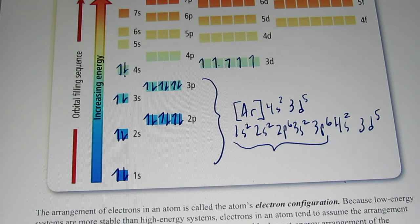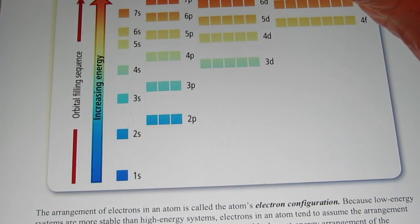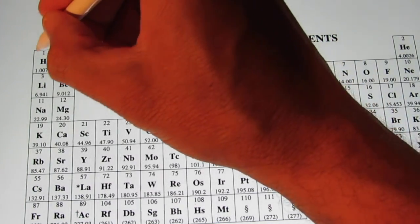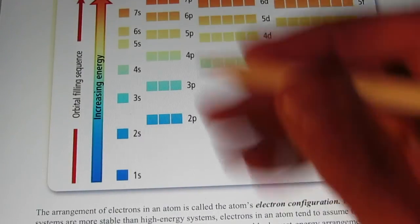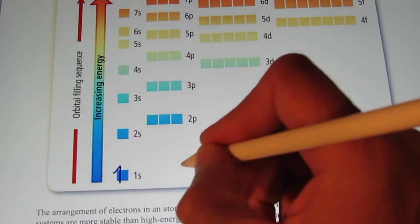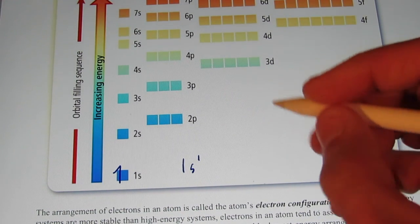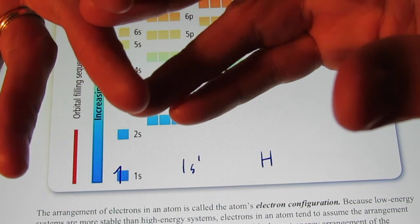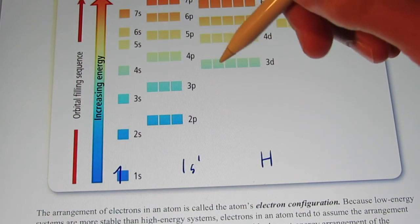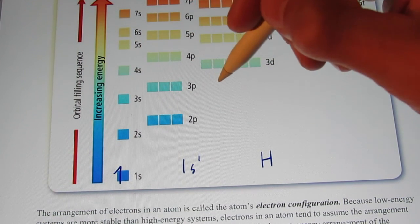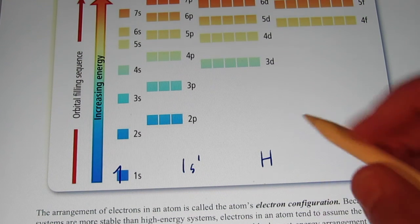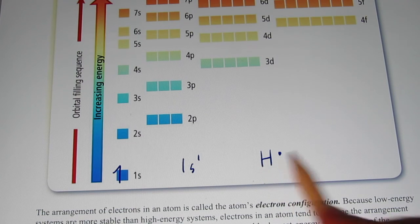Now let's go to something we call an electron dot picture. We're going to go back to the element hydrogen. As you recall, hydrogen has just one electron. Its electron configuration is the easiest of all — it's just 1s1. A dot picture consists of the symbol of the element followed by all of its valence electrons shown as dots around that symbol.